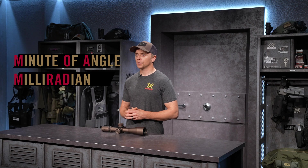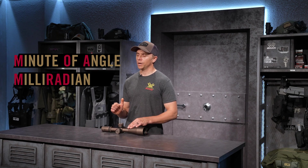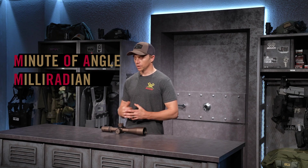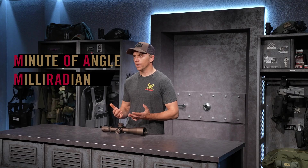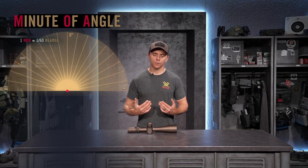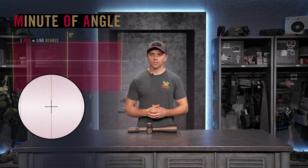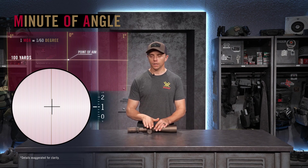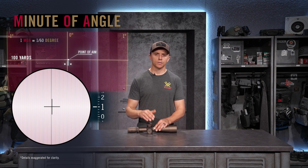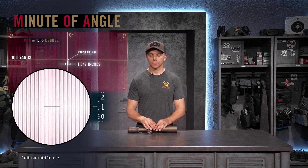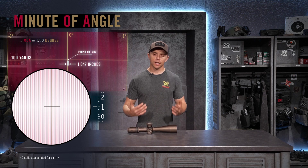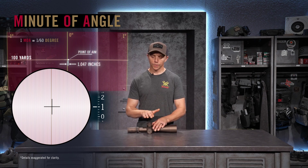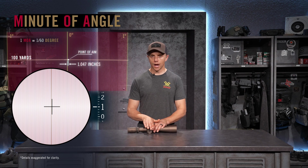They're both just angular units of measure and every increment means a certain value. Starting with minute of angle: if you get an optic manufactured in minute of angle, when you dial one minute on elevation or windage, that is going to be about one inch at a hundred yards — 1.047 inches exactly.